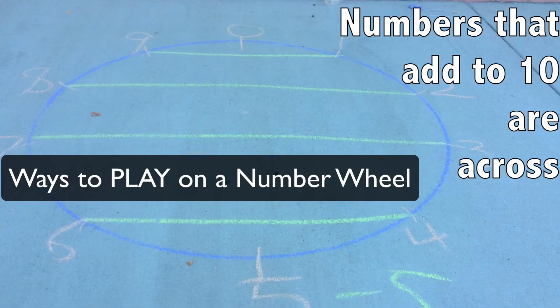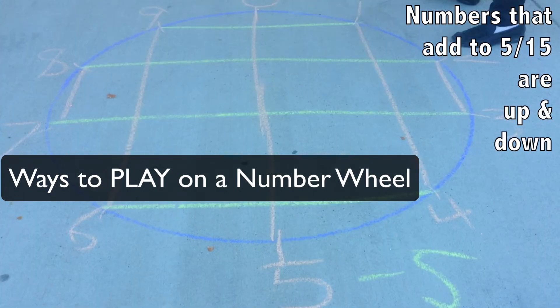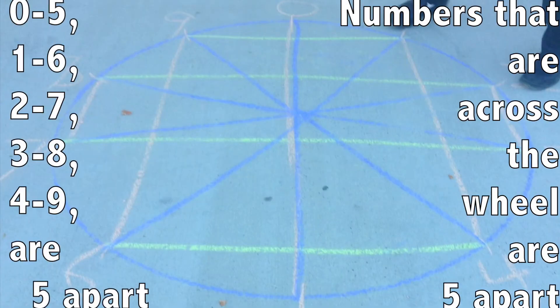Numbers that are across from each other add up to ten. Numbers that are up and down from each other add up to five or 15. And numbers that are across the wheel from each other, the blue lines, are all five apart.